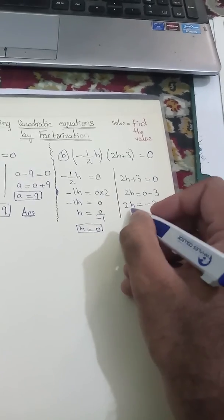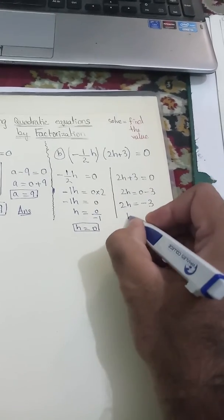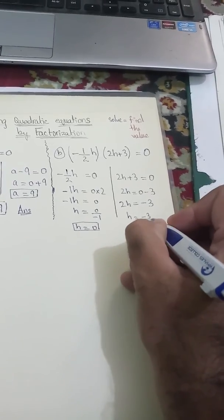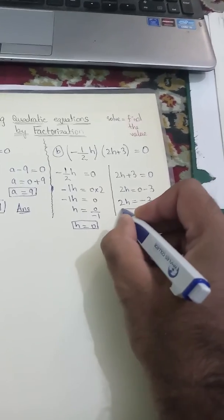This 2 is being multiplied with h. When it goes on the other side it will be divided. So the value of h will be -3/2.